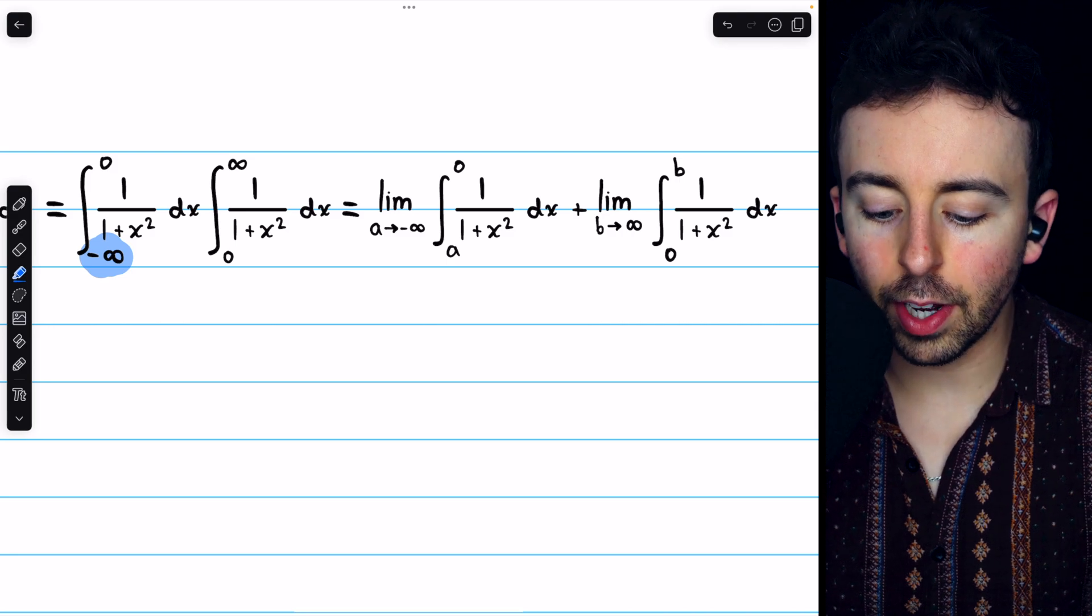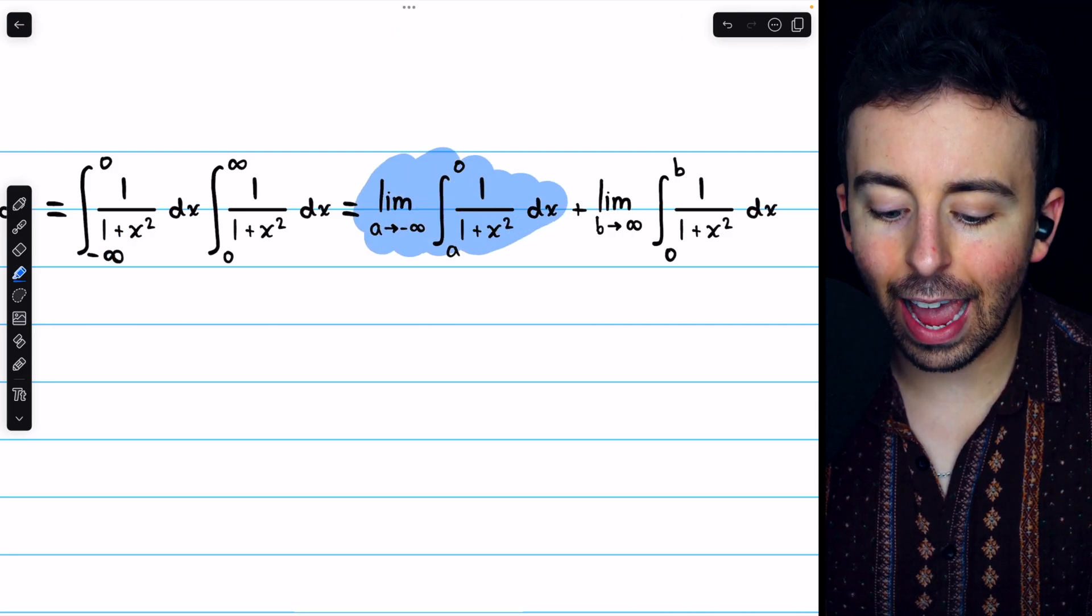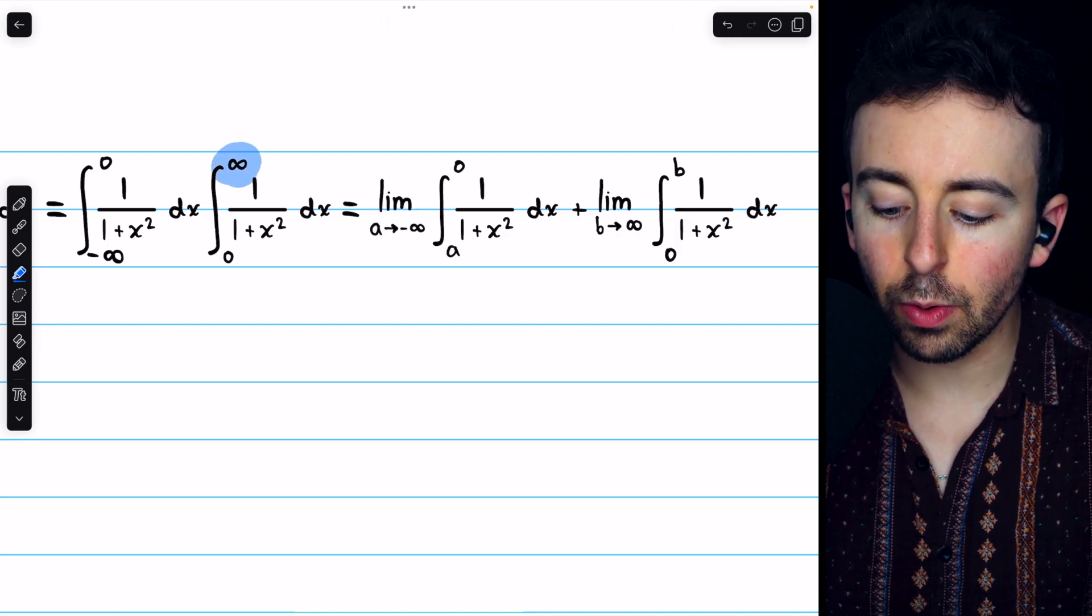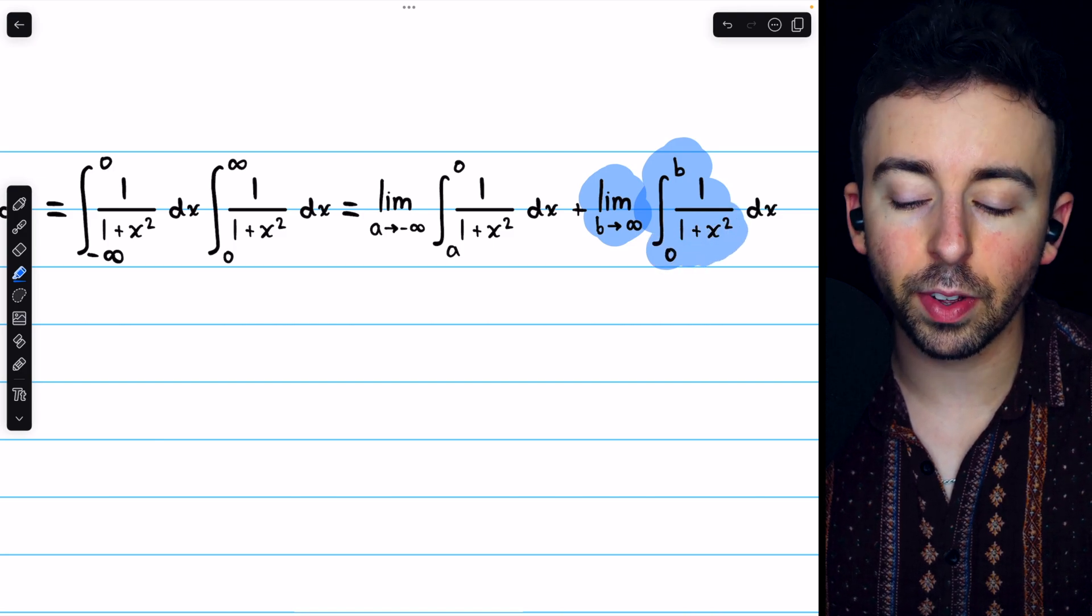So, we'll replace negative infinity with a, and then look at the limit of that integral as a goes to negative infinity. And we'll replace positive infinity with b, and look at this limit as b goes to positive infinity.